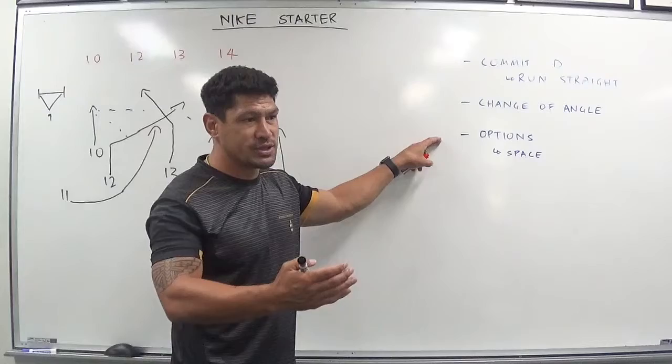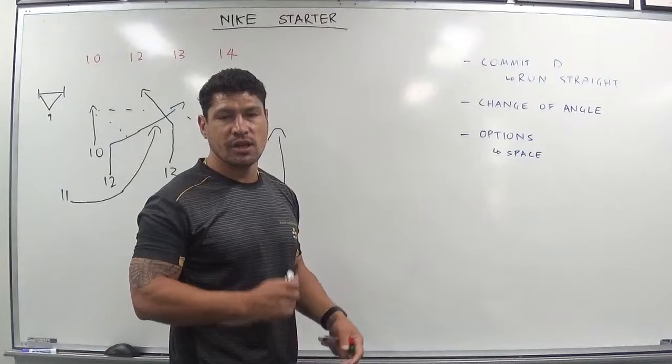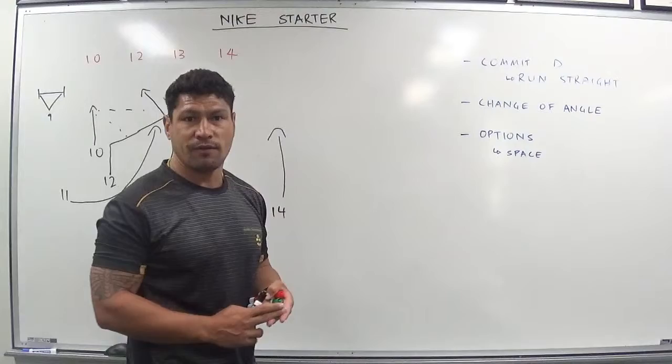Where is the space? Where does the door open for us to play? 10 is going to be the one that makes the decisions, but we also need 12 and 13 to communicate when they want the ball and if the space opens there.